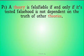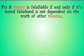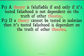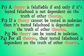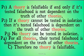I'm going to break it down into a premise-conclusion form to really show that this is a problem. Premise 1: a theory is falsifiable if and only if its tested falsehood is not dependent on the truth of other theories. Premise 2: if a theory cannot be tested in isolation, then its tested falsehood is dependent on the truth of other theories. Premise 3: no theory can be tested in isolation. Therefore, for all theories, their tested falsehood is dependent on the truth of other theories. Therefore, no theory is falsifiable.